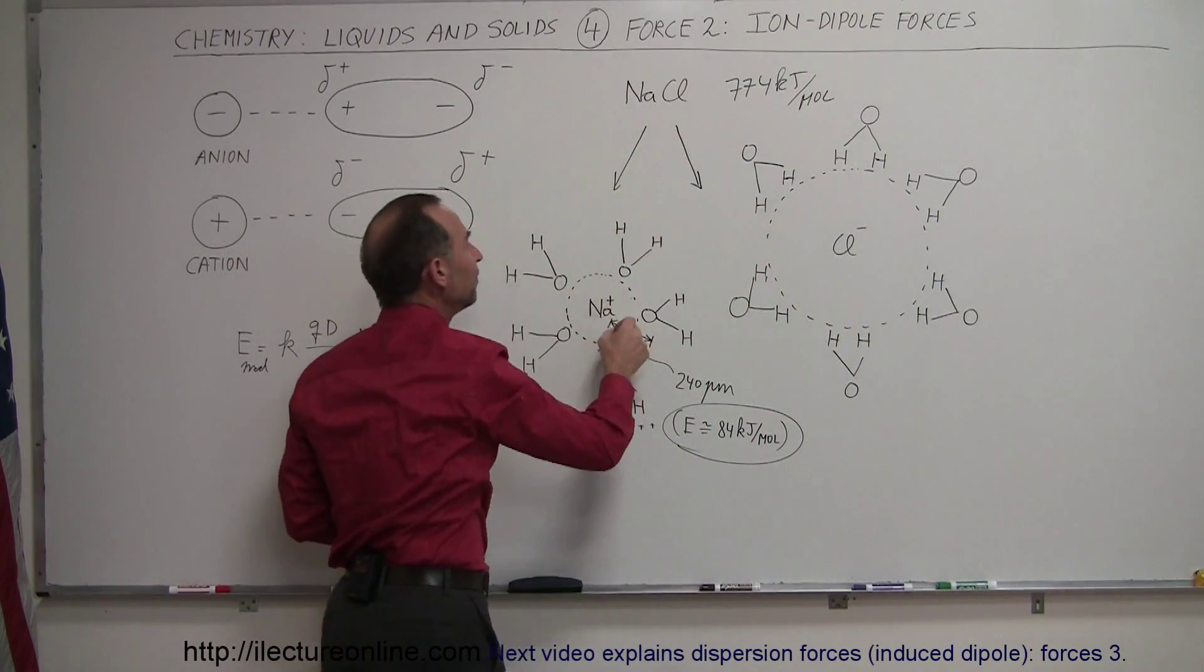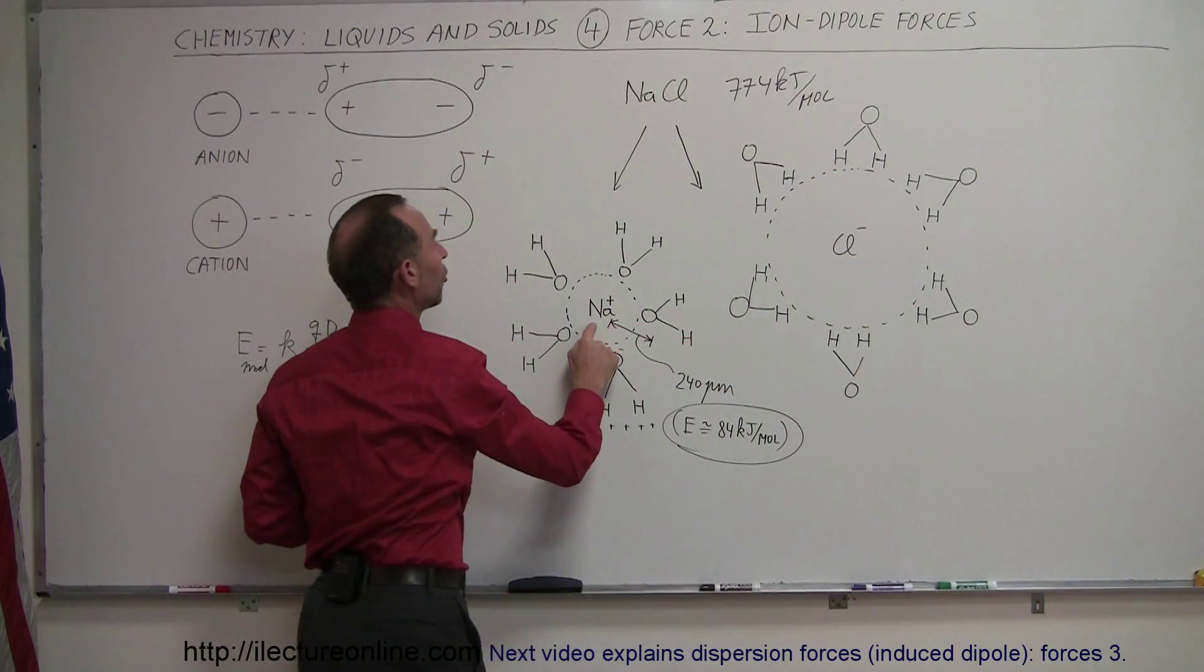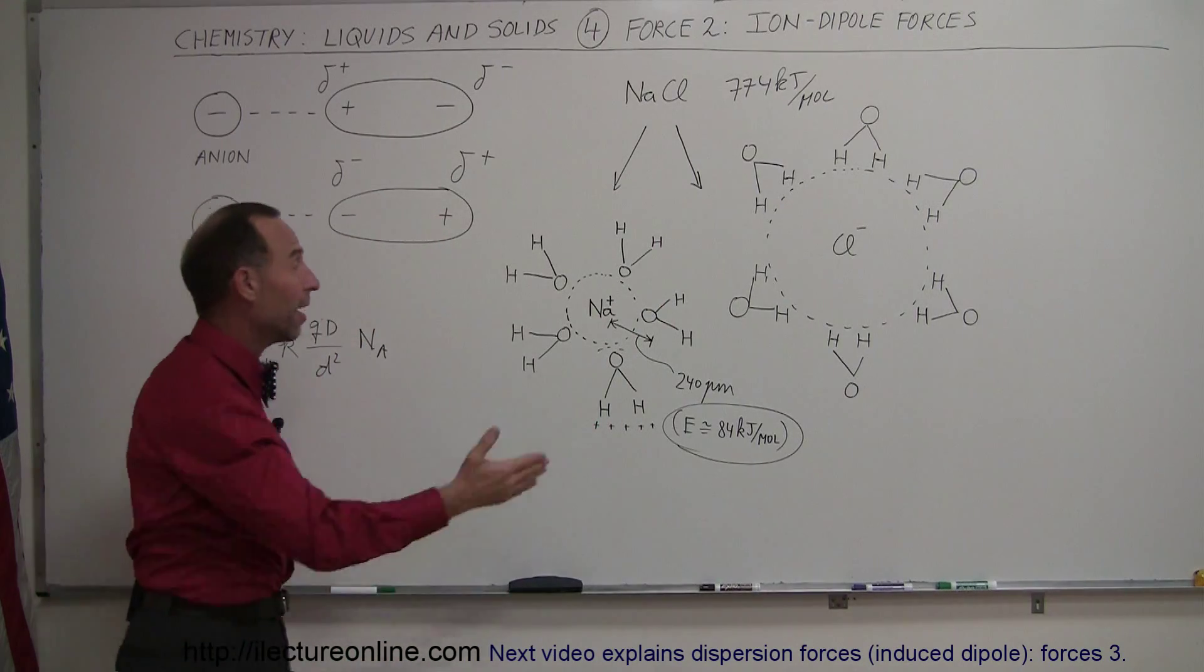Of course, at that point when you separate them, the chlorine will steal one of the electrons from the sodium and become negatively charged. The sodium will then be minus an electron and become positively charged, so these are now positive and negative ions.